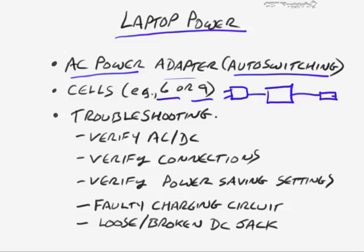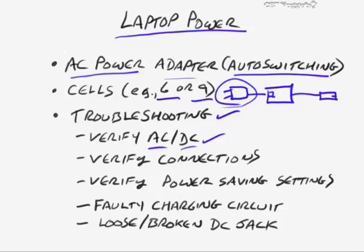For troubleshooting laptop power — and much of this also applies to desktops — you want to verify the AC/DC power. On the brick section of the adapter, you will very often see a small indicator light that shows whether it's receiving power properly.